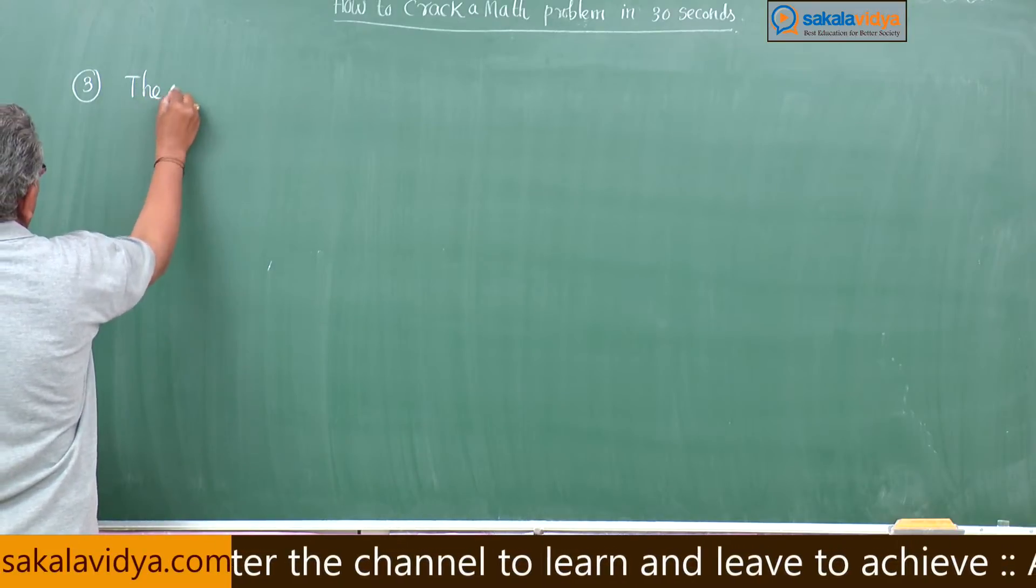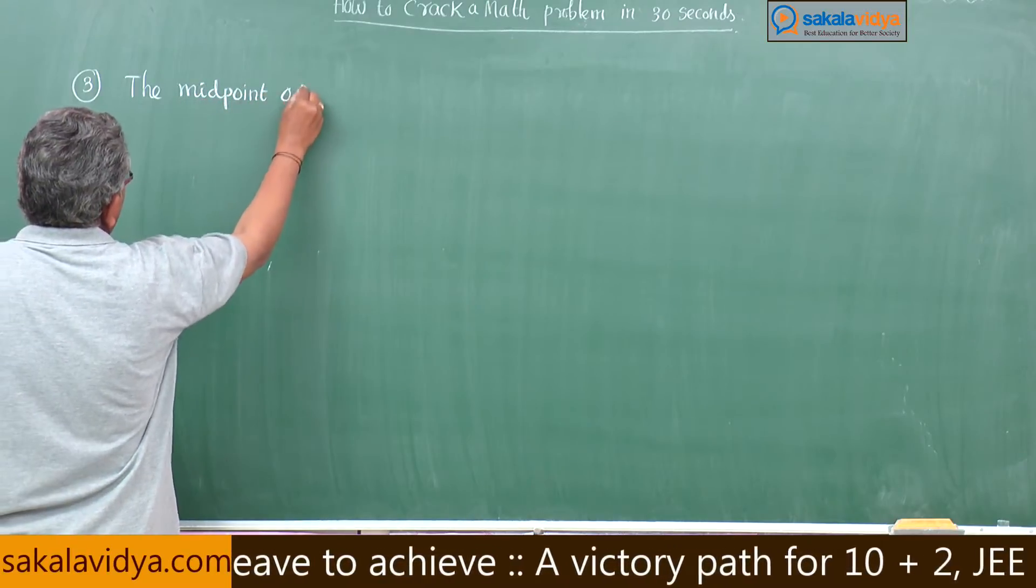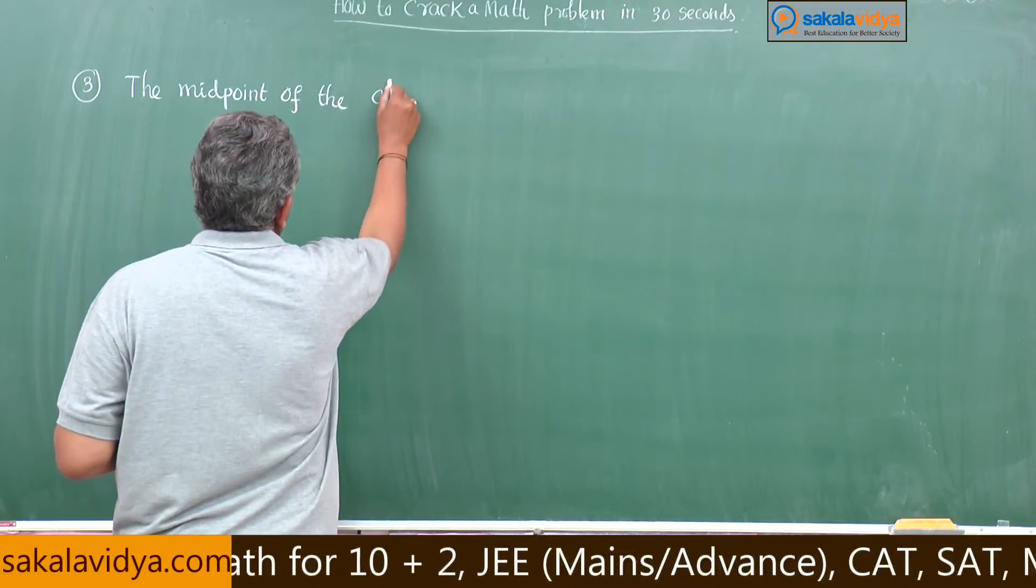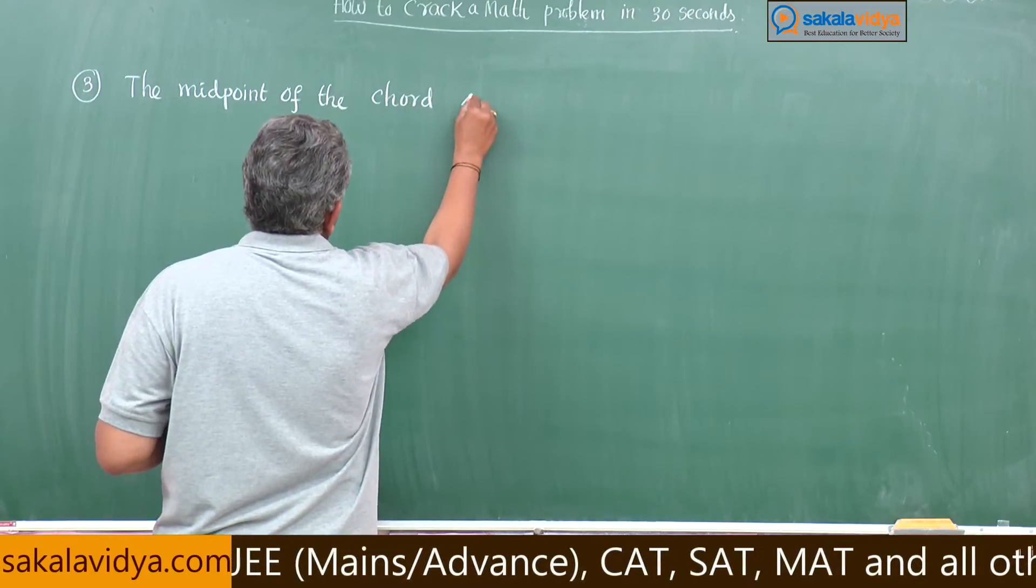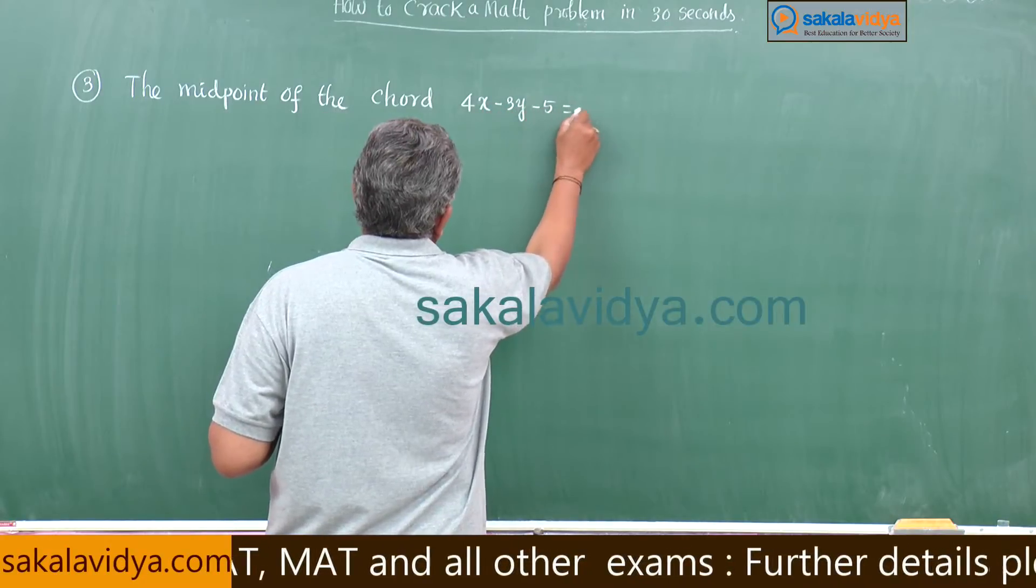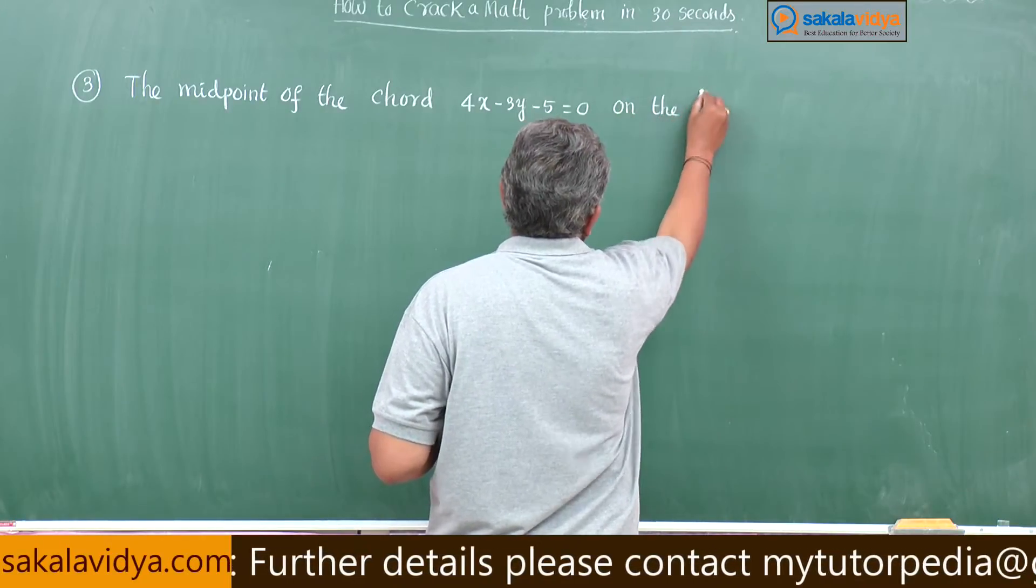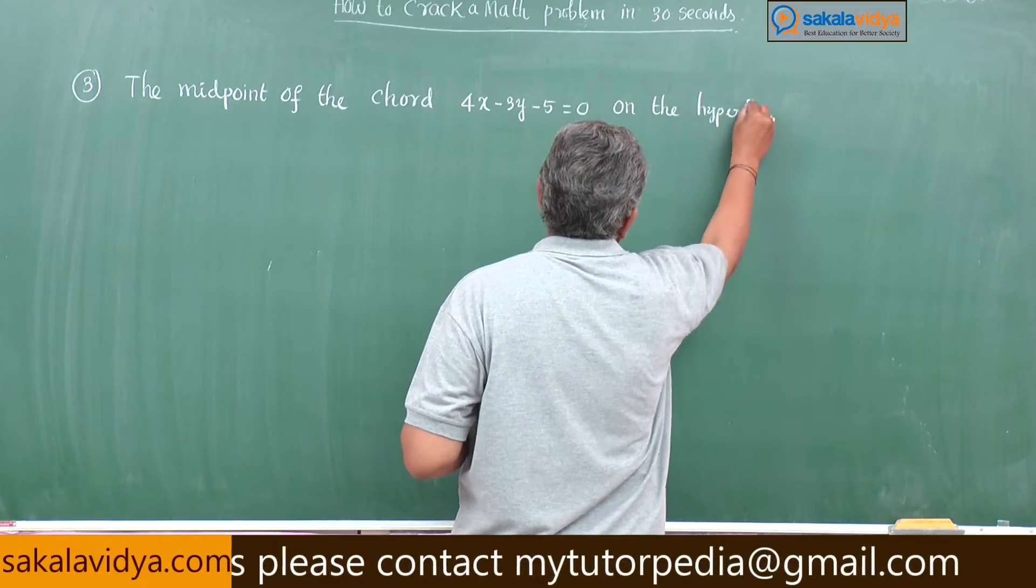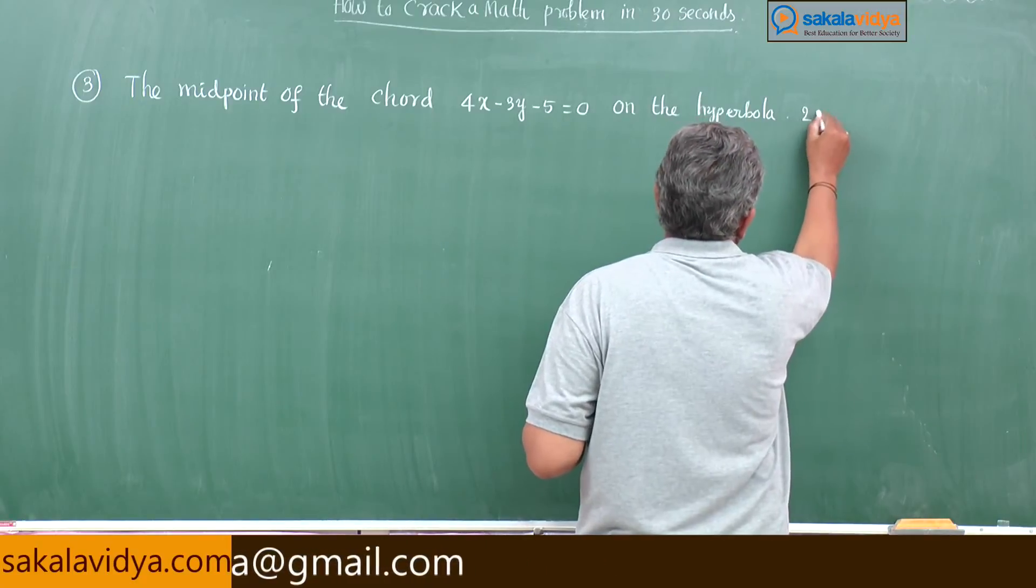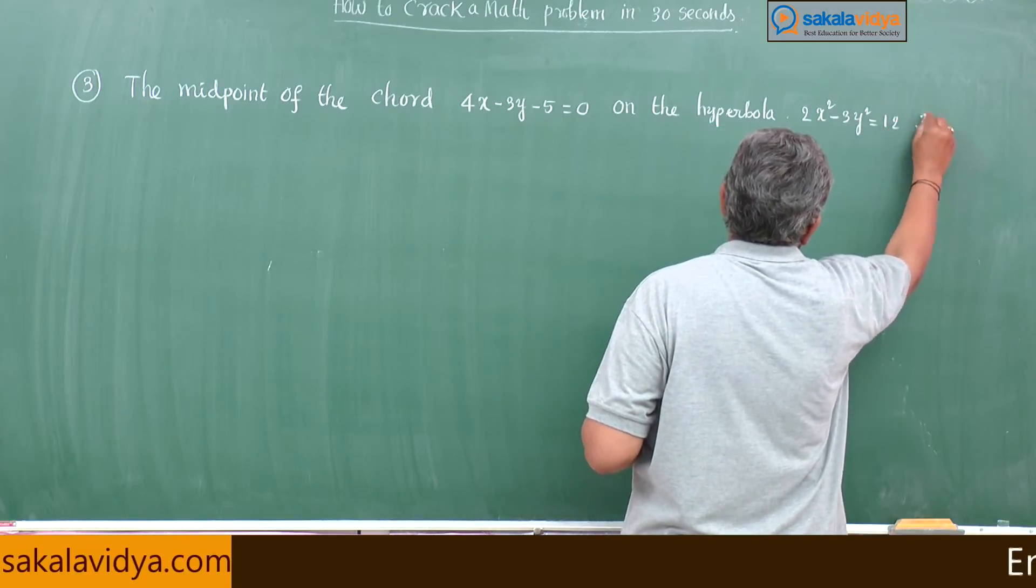The midpoint of the chord 4x minus 3y minus 5 equals 0 on the hyperbola 2x square minus 3y square equals 12 is: